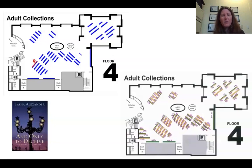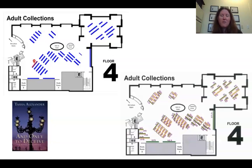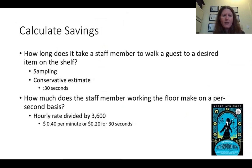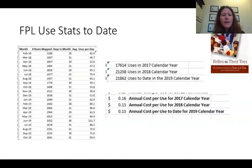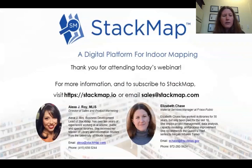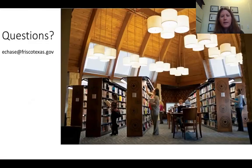Combined with seeing those maps left open on OPACs around the building — where someone has obviously clicked it and walked off to find the item — there's a clear sense that people are using it. In addition to that anecdotal evidence, we have data on how many times that Map It button is clicked on a daily or monthly basis. I only look at it monthly, but the data can be more granular. We occasionally hear from people who think it's great because it helps them navigate.